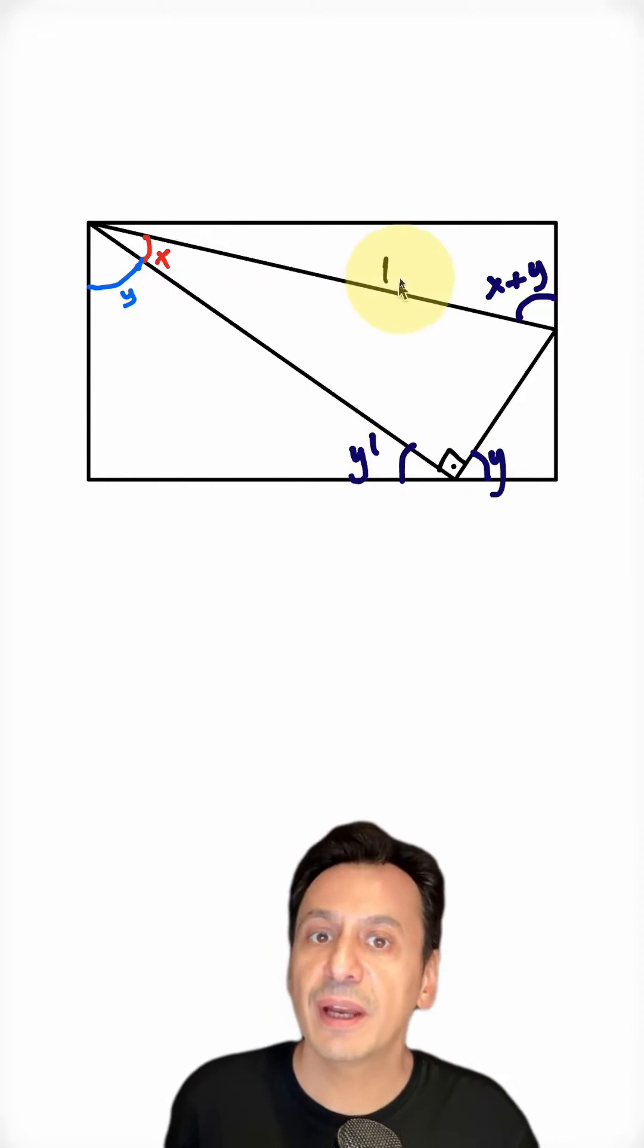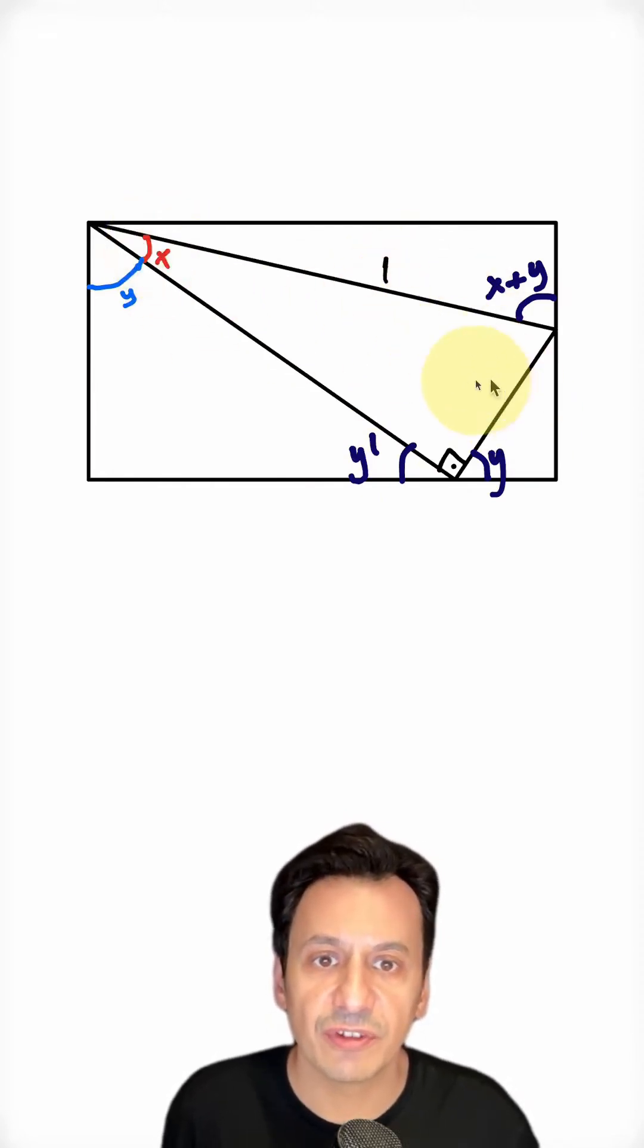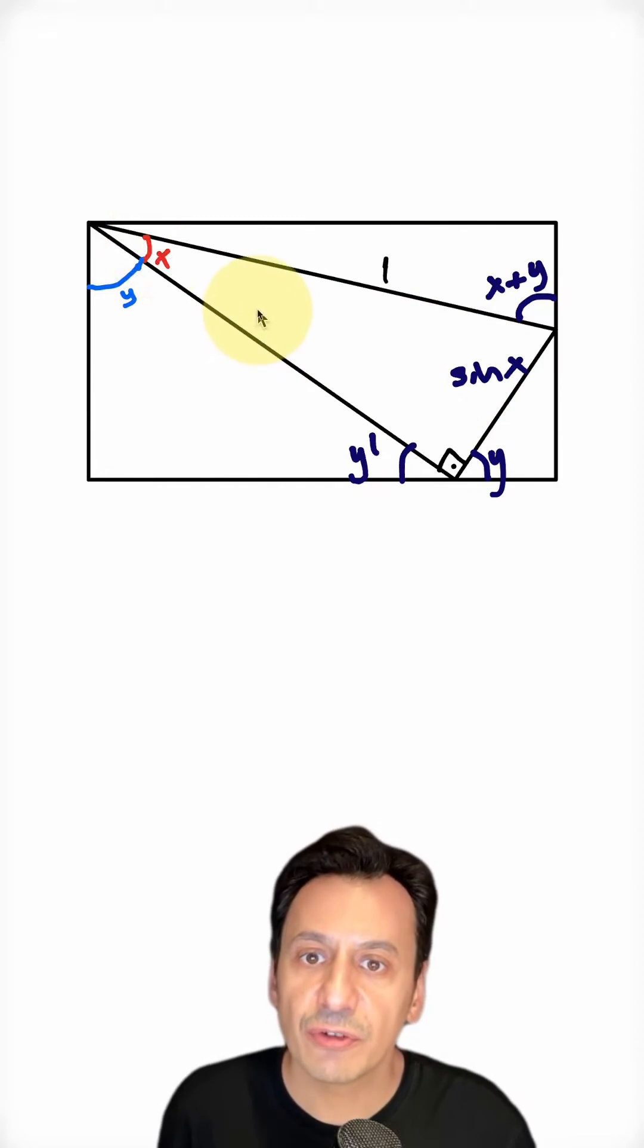In this right triangle, I see that my hypotenuse is 1. I can write sine x for the side opposite x and cosine x for the adjacent side.